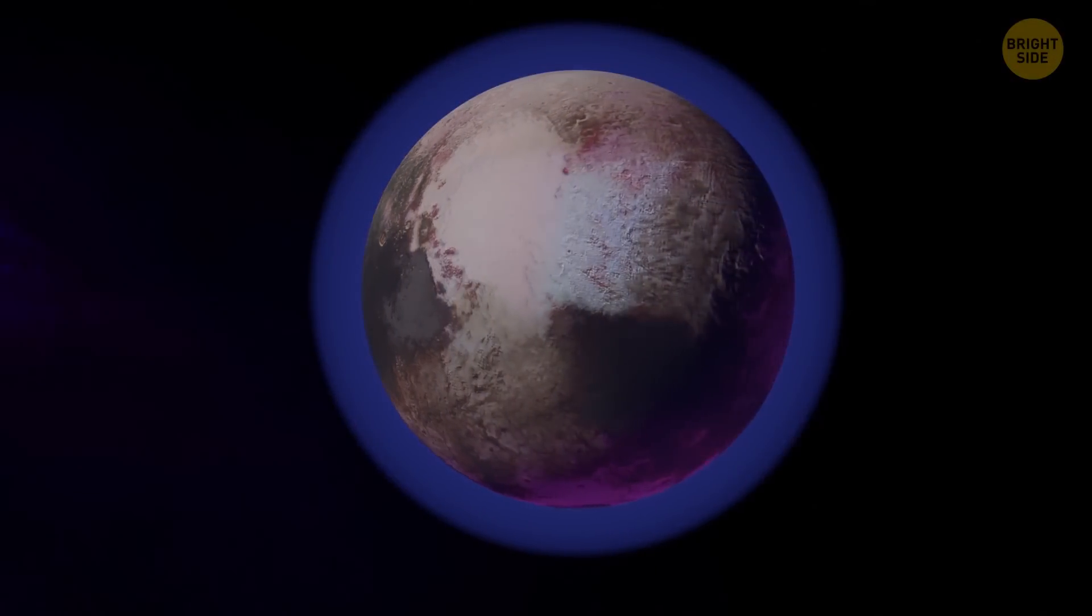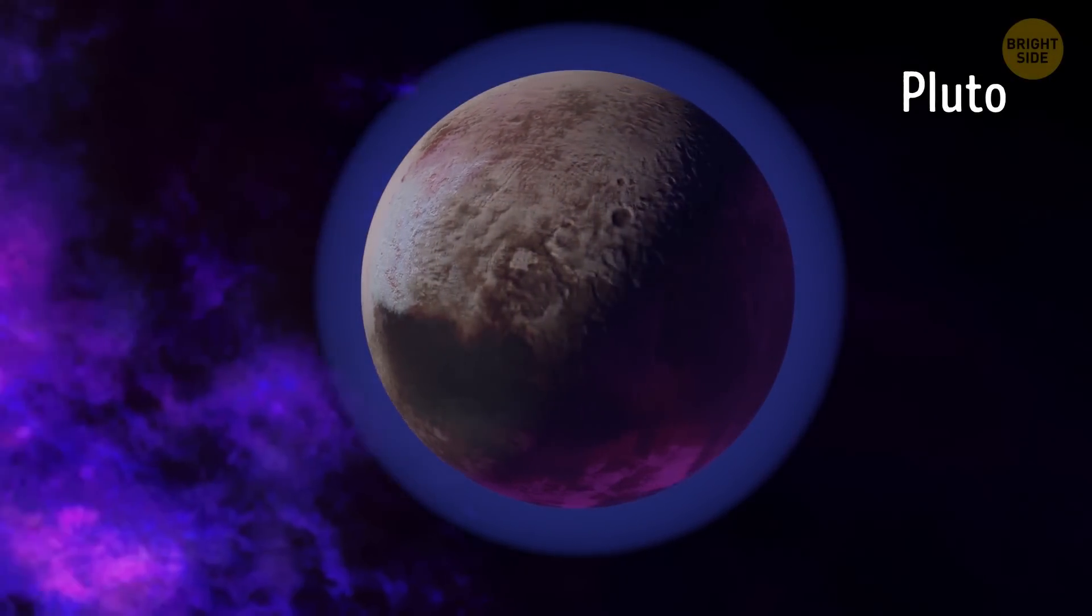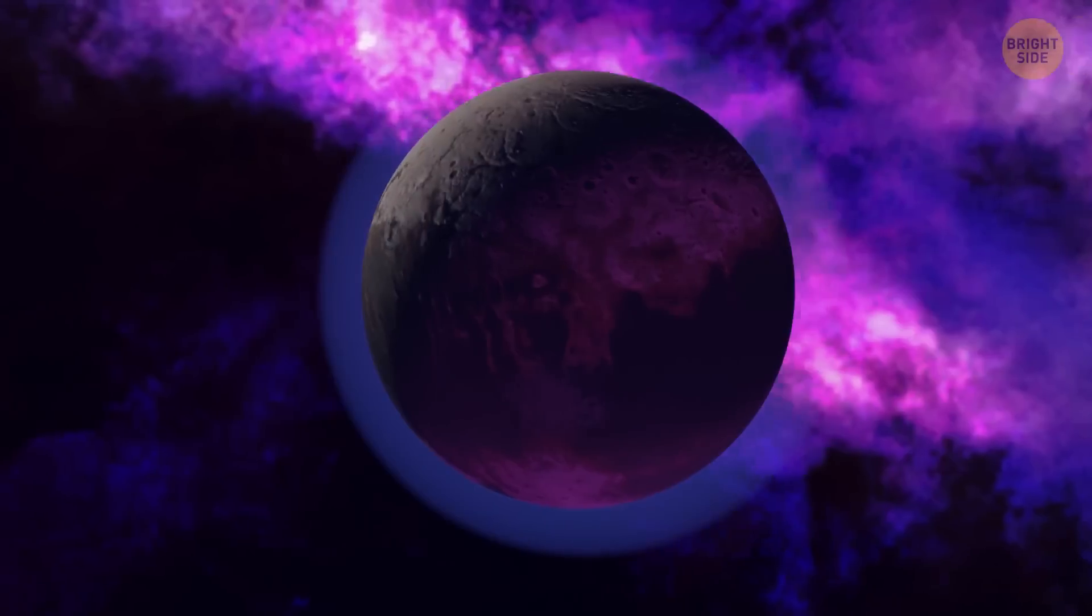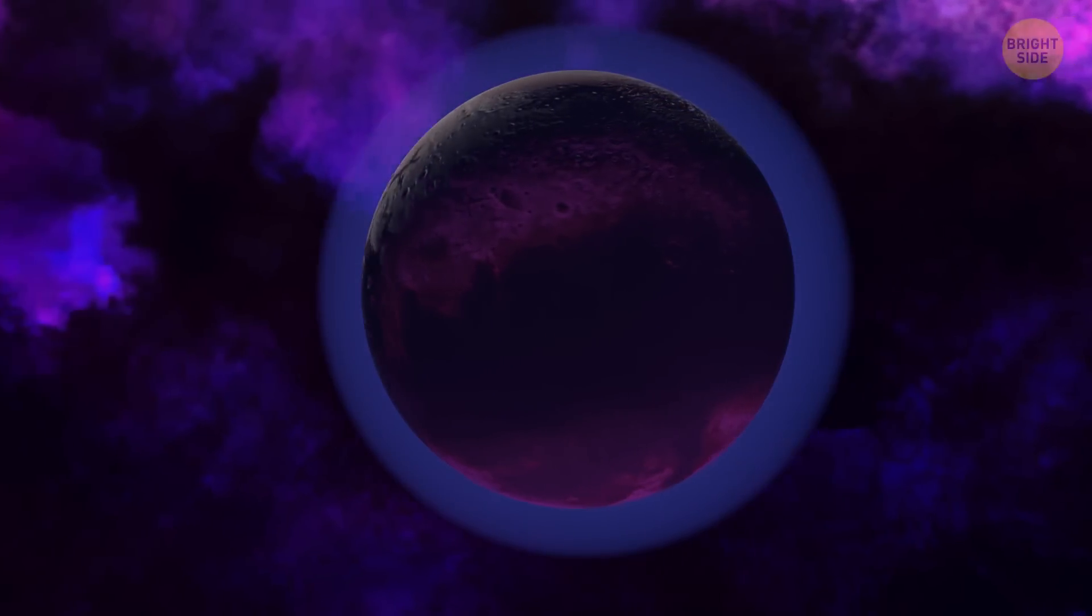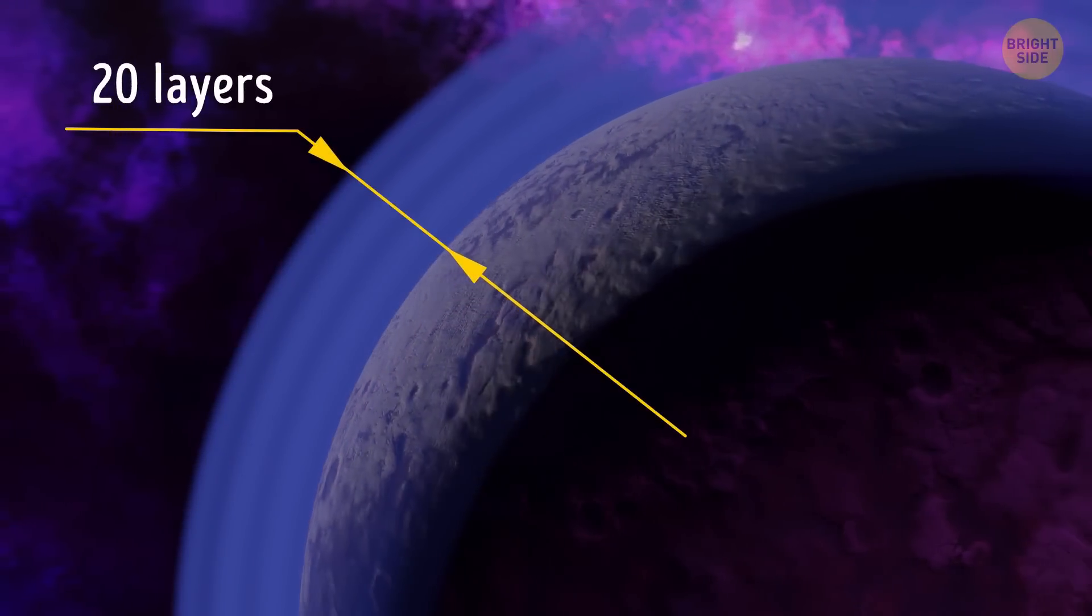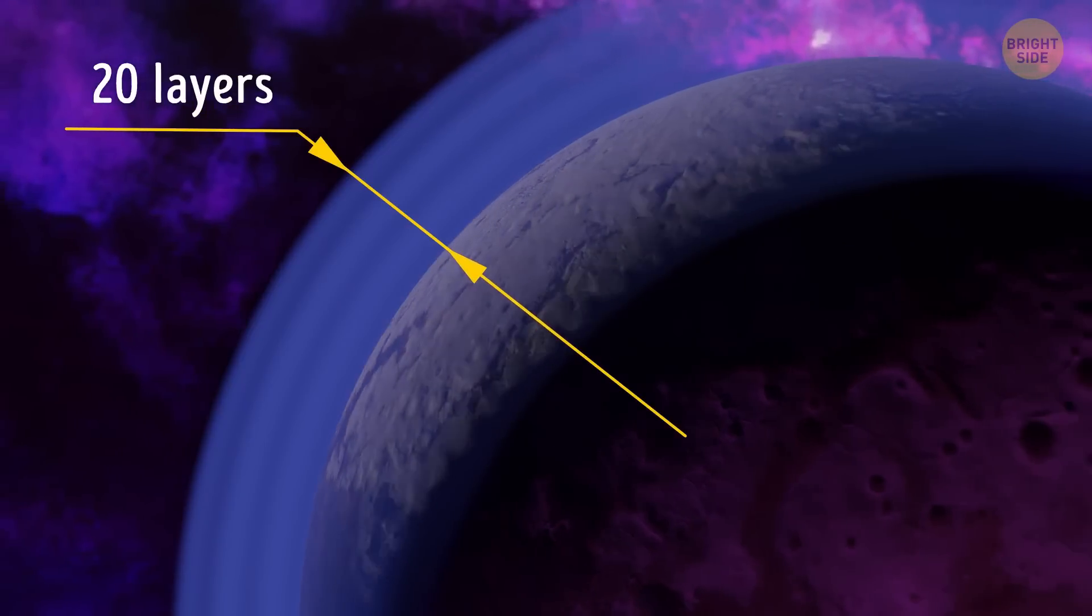There's another weird thing about Pluto, or rather about its atmosphere. First, it rises way higher above the surface of the dwarf planet than, for example, the Earth's atmosphere. What's more, the atmosphere on Pluto has more than 20 layers, and all of them are super cold and very condensed.